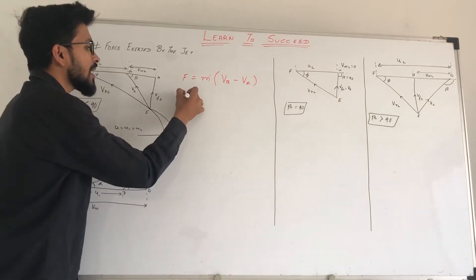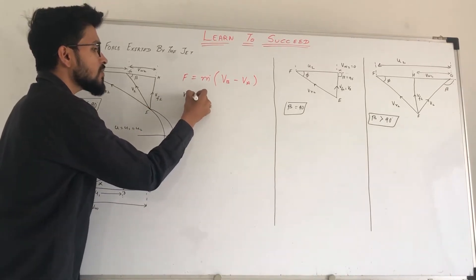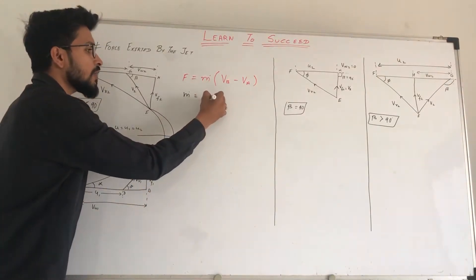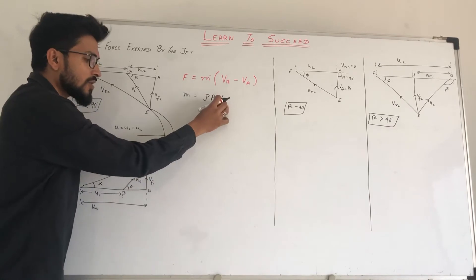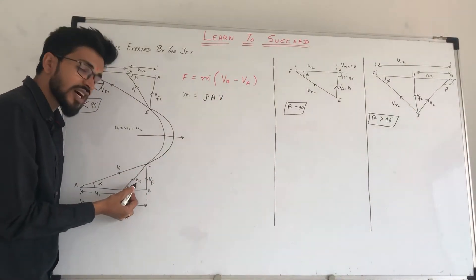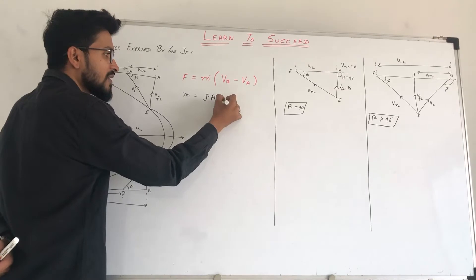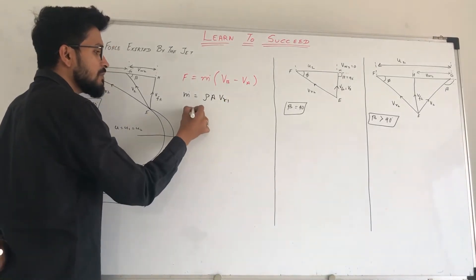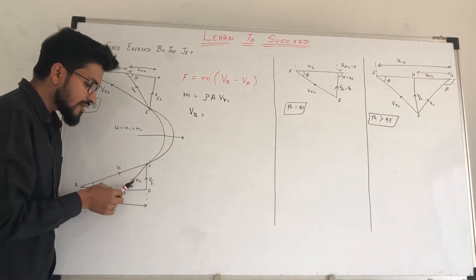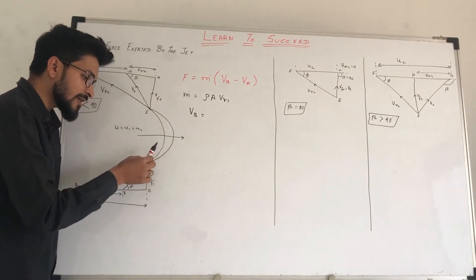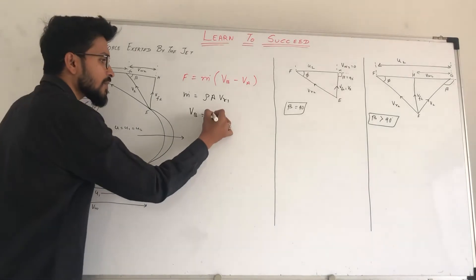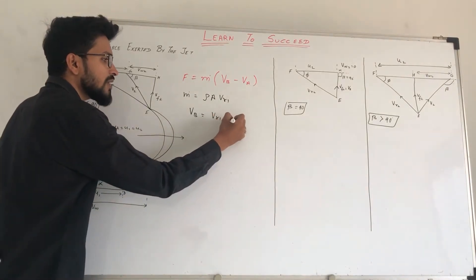Here M-dot is the mass flow rate. M-dot is equal to rho times a times velocity, which is the velocity under strike — that velocity is vr1, the relative velocity. So M-dot equals rho·a·vr1. Now for VB, the velocity before striking will be vr1 velocity, and we now take the x-component, which will be vr1·cos(theta).